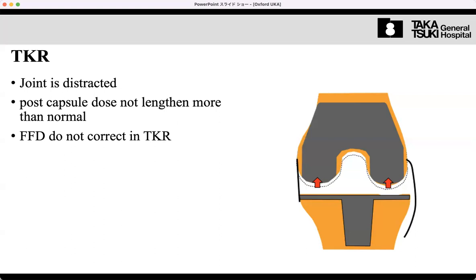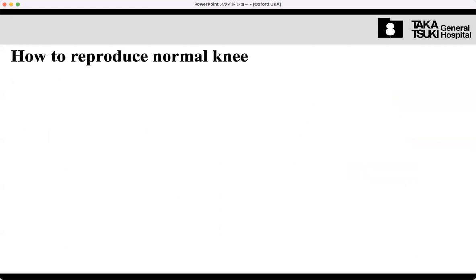Unlike the TKA, UKA can reproduce the ligament balance and previous joint line. That is the difference.